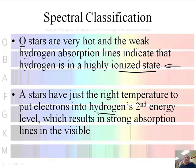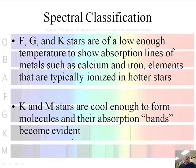At A stars, they're just the right temperature to put electrons into the hydrogen's second energy level, which results in strong visible lines in the invisible spectrum. And then the FGK stars are low enough in temperature to show absorption lines of metal, such as calcium and iron, that are typically ionized in hotter stars.